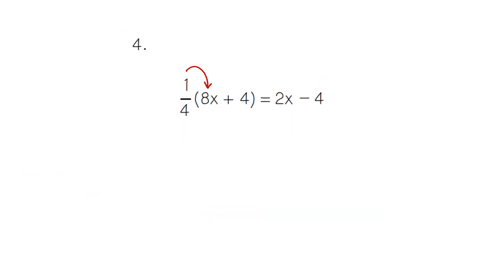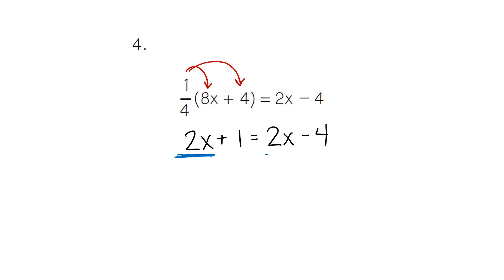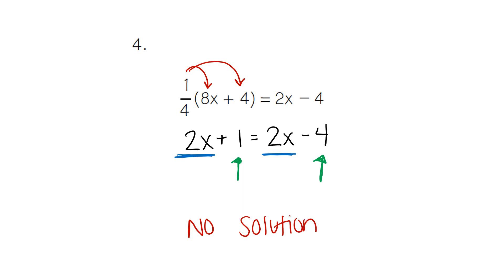For number four, we would start by solving the parentheses, meaning we multiply. 1/4 times 8 gives us 2, and 1/4 times 4 gives us 1. The equals 2x minus 4 stays the same. You will notice that the 2x and the 2x match, but the positive 1 and the negative 4 do not match. When the x's match and the whole numbers do not, that is classified as a no solution — it is unsolvable. So we do not continue solving. Once we recognize the no solution, we can stop and write no solution as our answer.